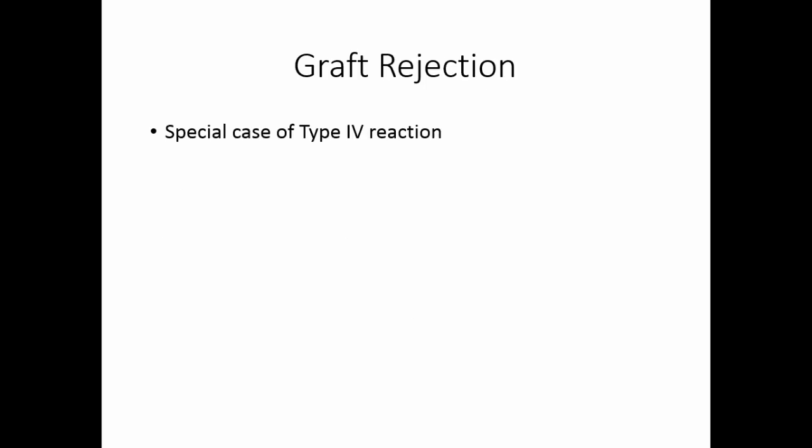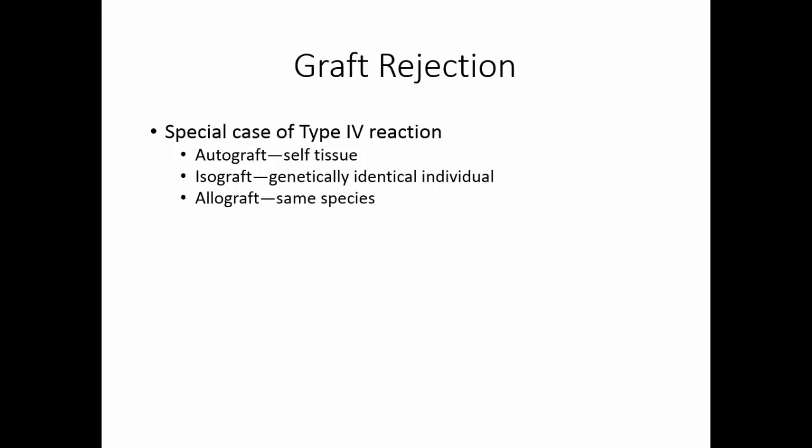Graft rejection is a very special case of a type 4 reaction. There are four types of grafts you can get. An autograft is when you donate tissue to yourself, like for a skin graft. An isograft occurs if you have a genetically identical individual, like a genetic twin. Allografts are when you get grafts from the same species — this is commonly what's done with kidney, liver, heart, and lung transplants. And xenografts are when you get living tissue from a different species. This may sound a little science fiction, but we've been using pig heart valves for many years.